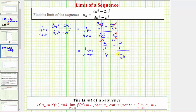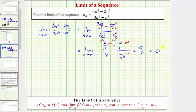Notice that for these three fractions the numerators are constants and the denominators contain either two, three, or four factors of n, which means as n approaches infinity the denominators increase without bound and therefore all three fractions approach zero. The eight is not affected by n, and therefore this limit is equal to zero over eight, which equals zero.